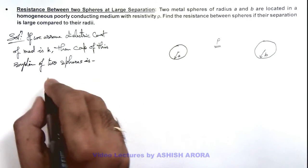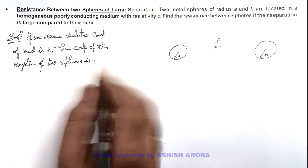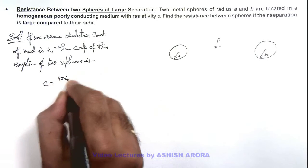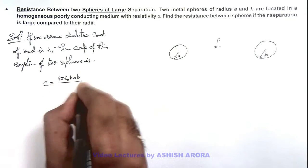This we already calculated in the topic of capacitance and the value C is given as 4π ε₀ k ab / (a + b).